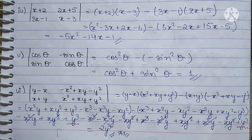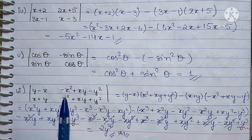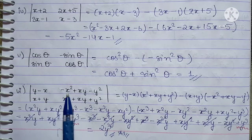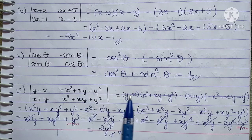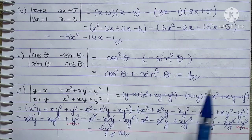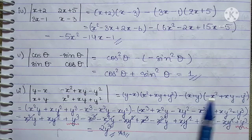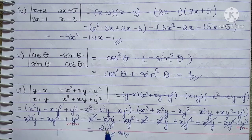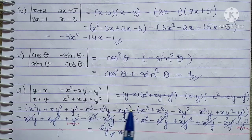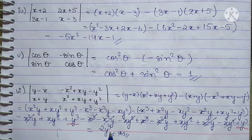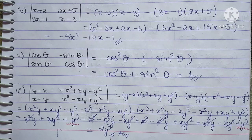Come to question number 6 — this is a simplification question. We have (y − x)(x² + xy + y²) minus (x + y)(−x² + y − y²). First we do this multiplication. After expanding, we get 2y³. So 2y³ is our answer. Come to question number 2.